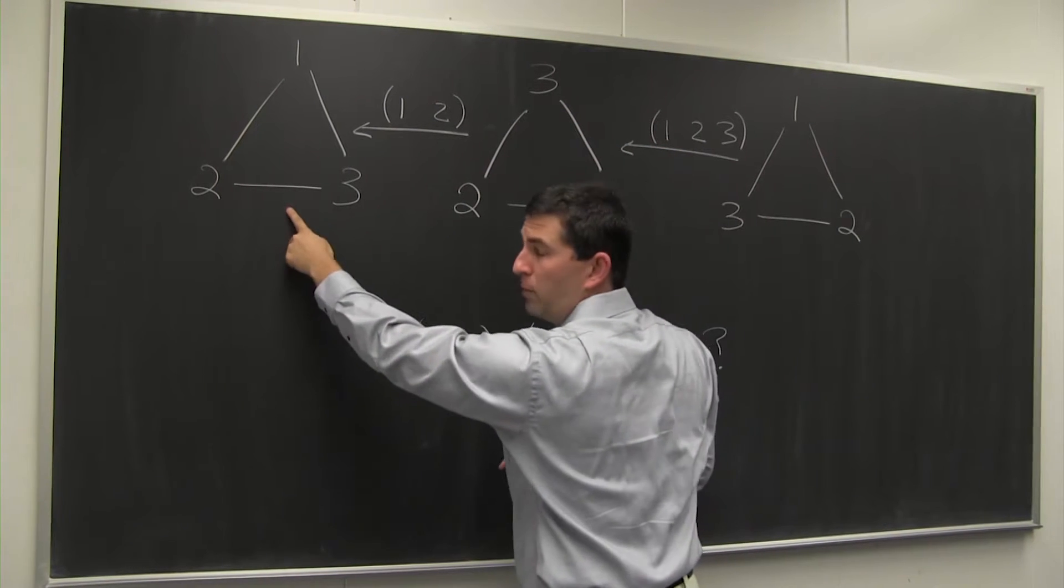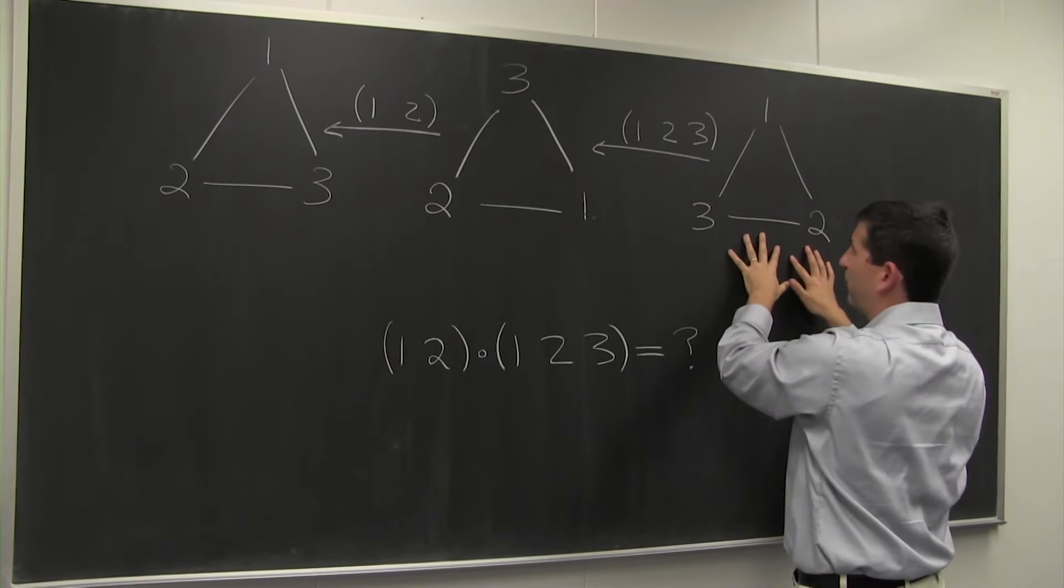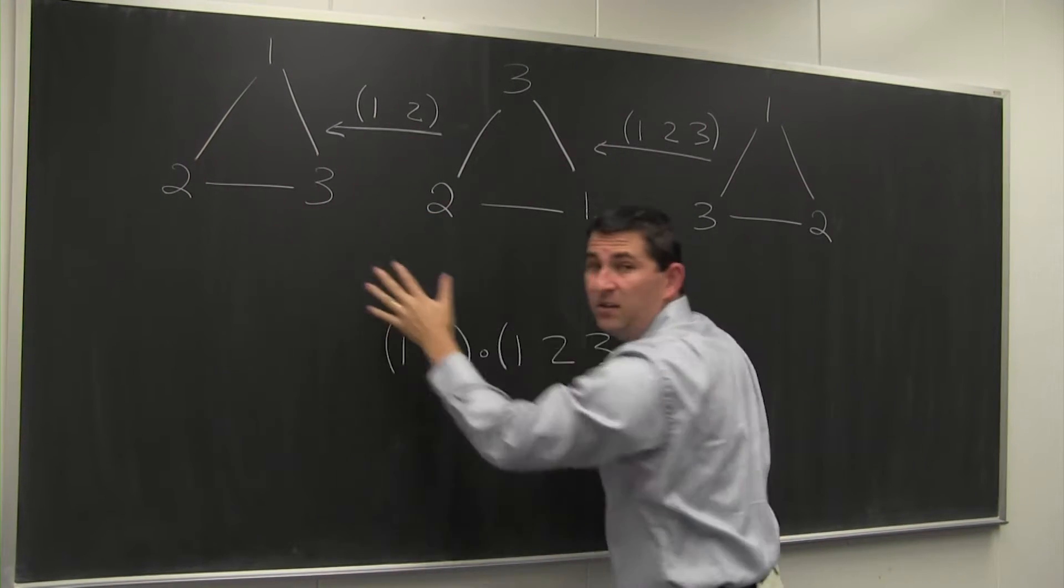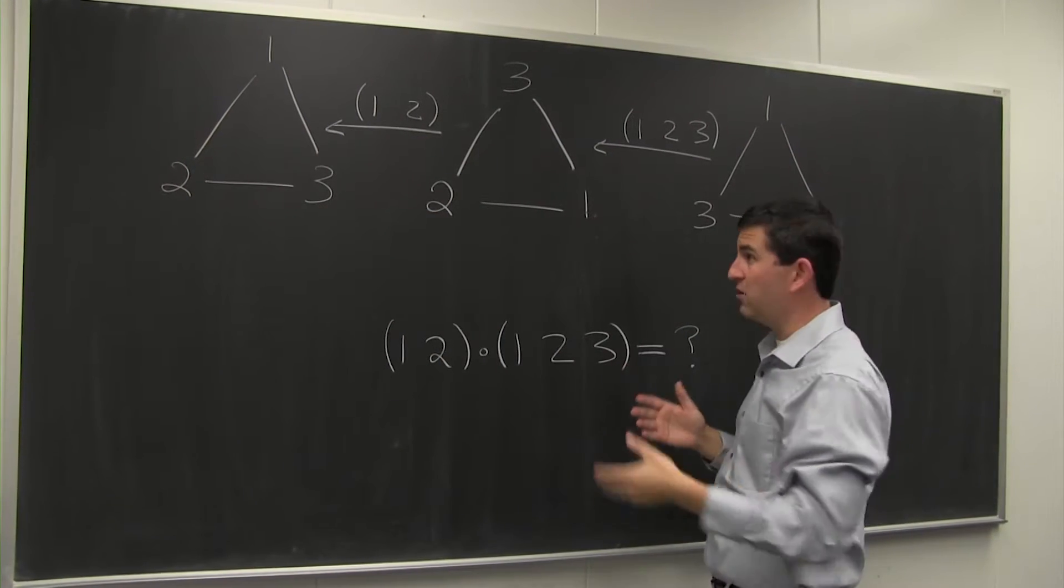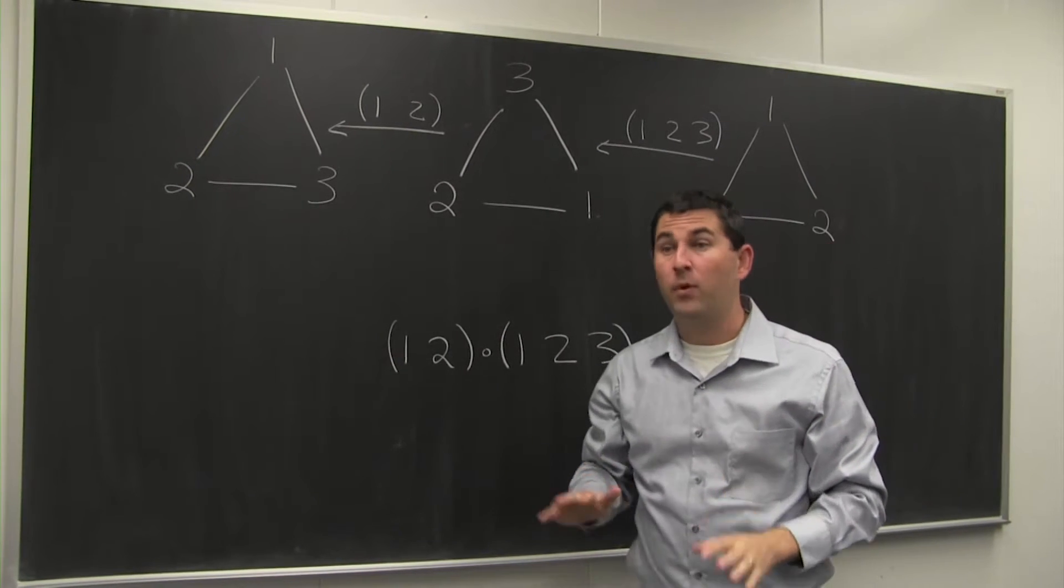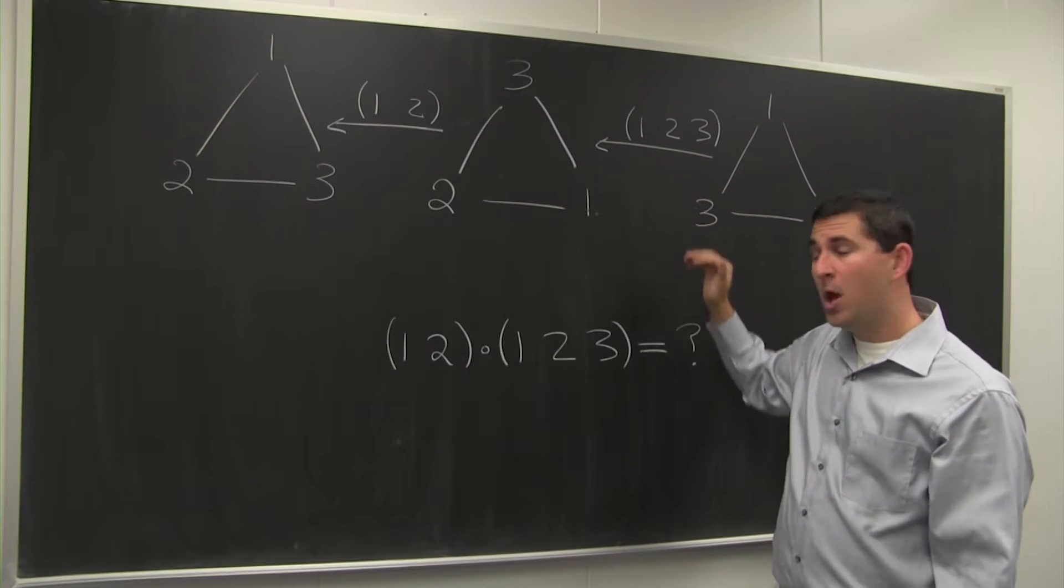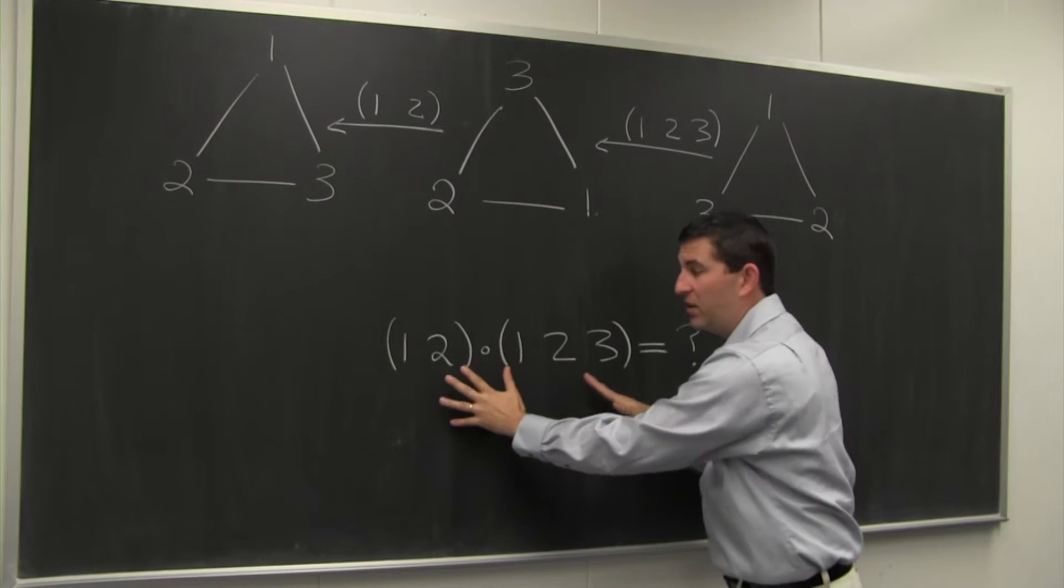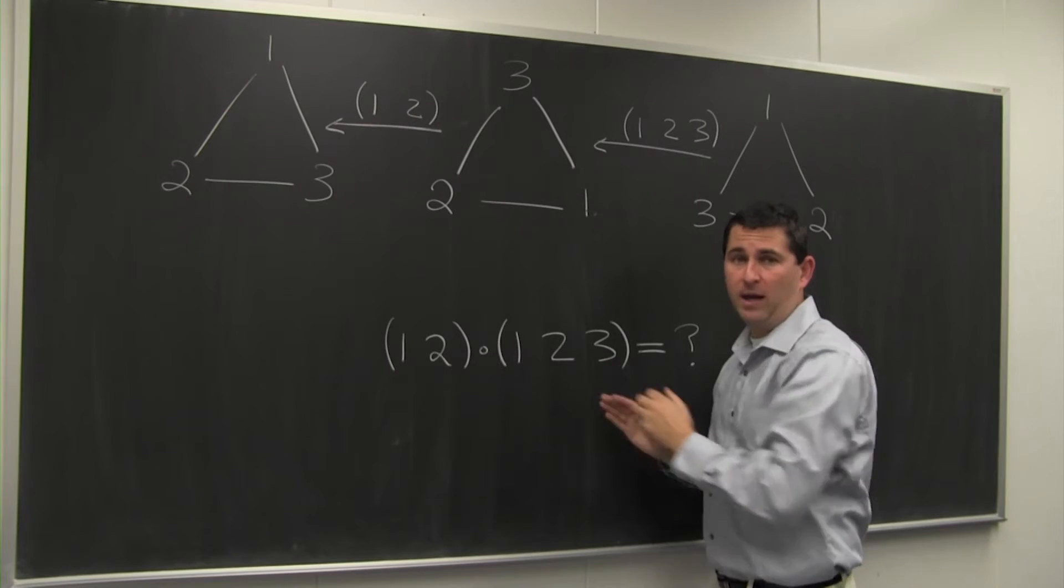we end up with a new permutation. And looking from the first to the last, it's really easy to see what the cycle notation should be. It's just 2 and 3 switched. But what if we were asked to solve this problem without the benefit of the diagram? What if we were only given the cycle notation? How would we work out the problem then?